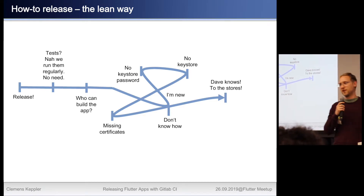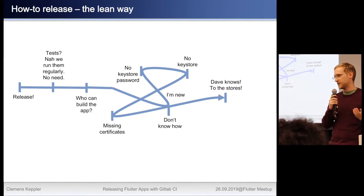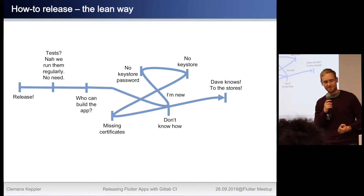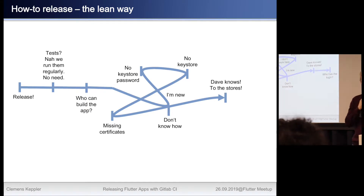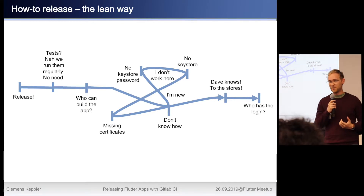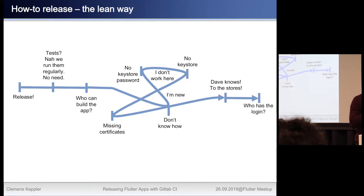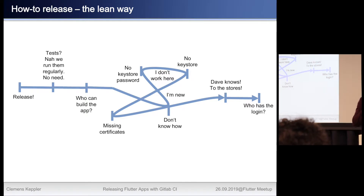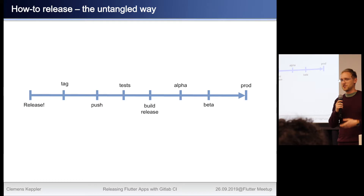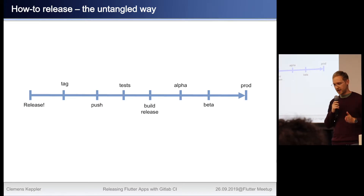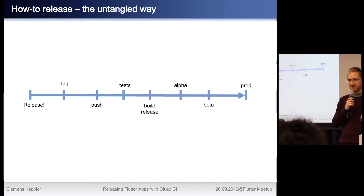Luckily, at some stage we find someone — here it's Dave. Dave saves the day, and we can finally build the app. But then who has access to the Play Store or App Store Connect? It's really too complicated. This is really how it should be: you say release, you tag your commit, you push it, and that tag commit gets tested, built, and the exact artifact from that exact tag gets automatically or manually uploaded to the Play Store or App Store.